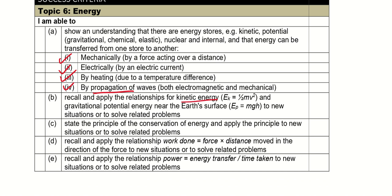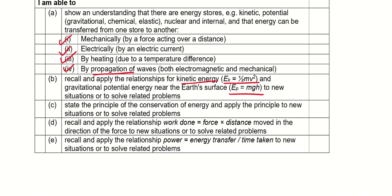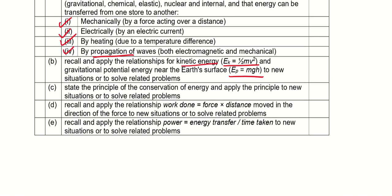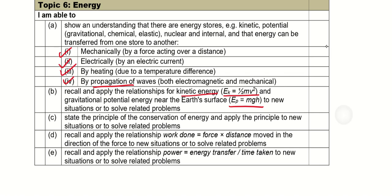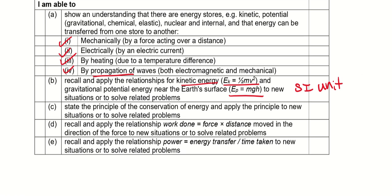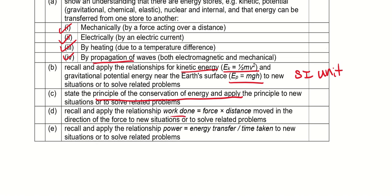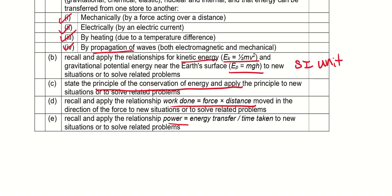There are two formulas to know: kinetic energy is half mv squared, and gravitational potential energy is mgh — we'll go through these in detail later. This chapter is an SI unit chapter so everything must be in SI units. We also need to state the principle of conservation of energy, the formula for work done (force multiplied by distance), and power equals energy transfer over time taken.